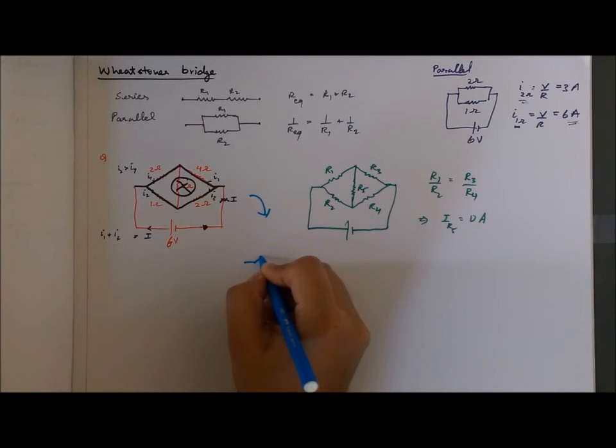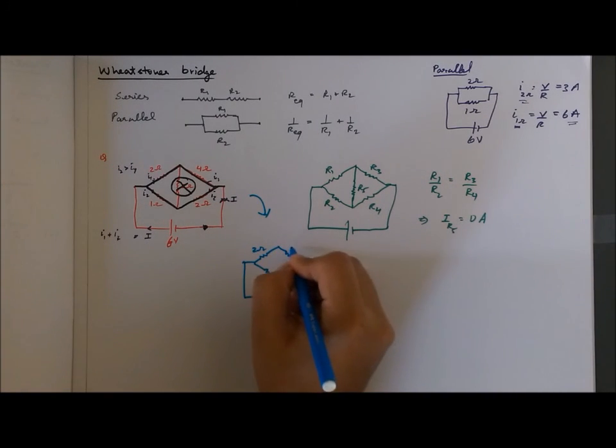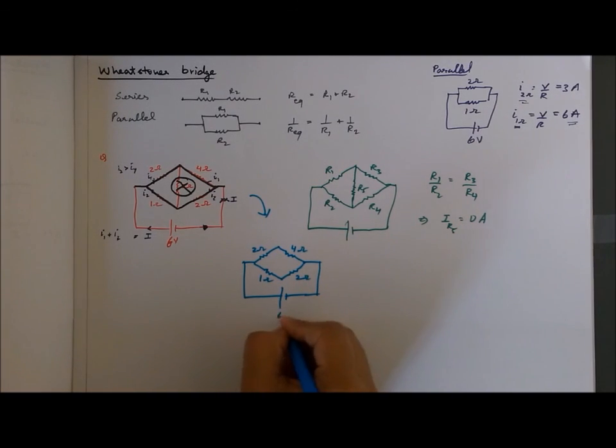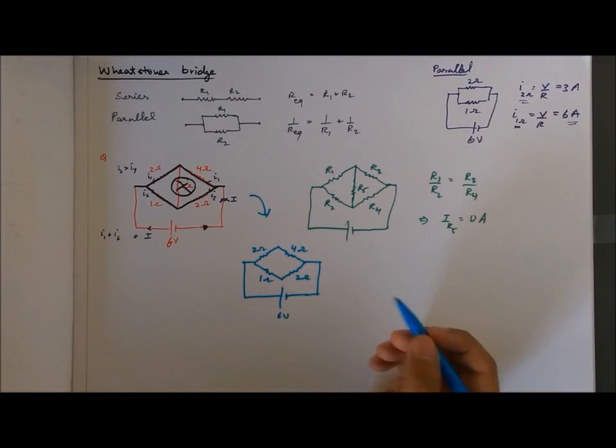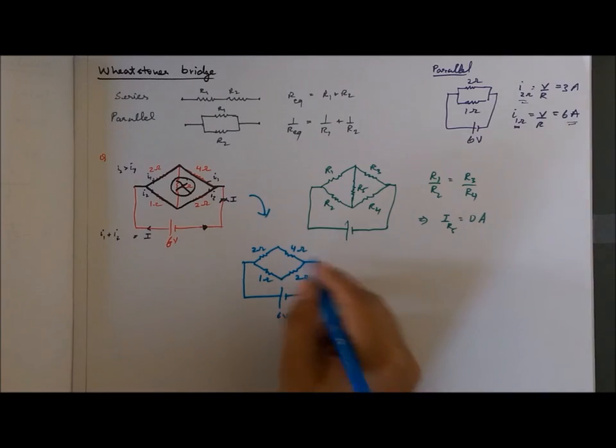So this is my 2 ohm resistor, this is my 4 ohm resistor, this is my 1 ohm resistor, and this is my 6-volt battery. Now these two are in a series combination, and so are these. And once I find the net equivalent of this, which is 6 and 3, then these two become a parallel combination, and hence I can solve the circuit.